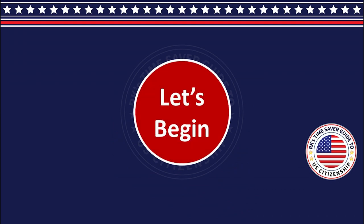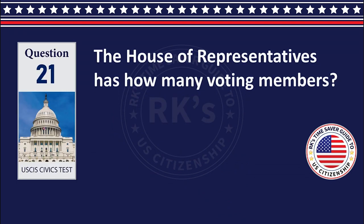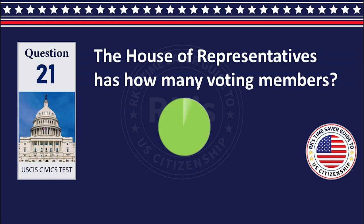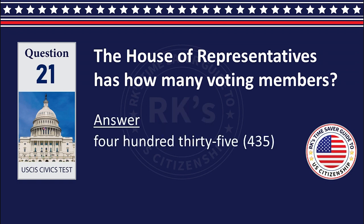All the best. Let's begin. The House of Representatives has how many voting members? 435.